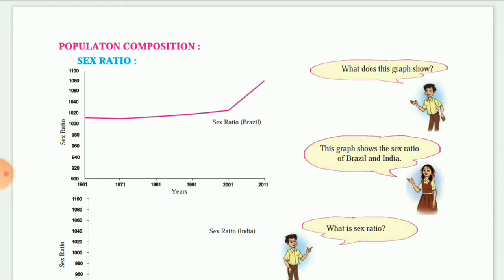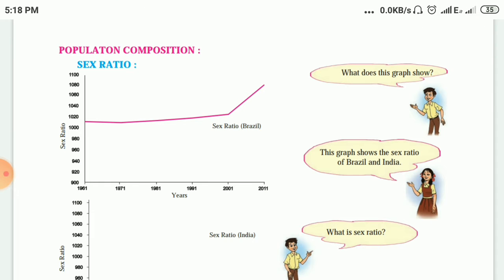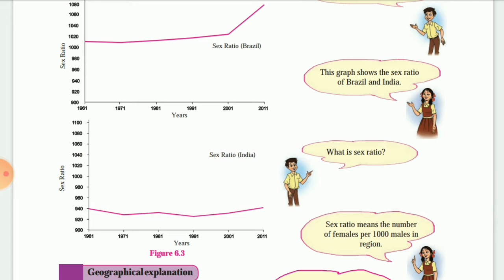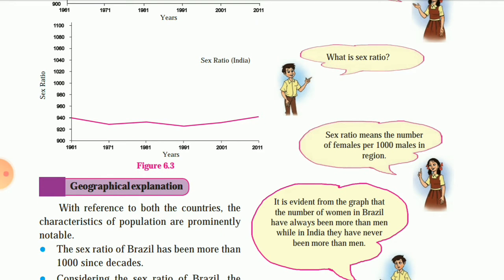So you see the graph over here. In this graph the year is mentioned and the sex ratio is given. What is sex ratio? Sex ratio means the number of females per 1000 males in a region — how many women are there for every 1000 men.